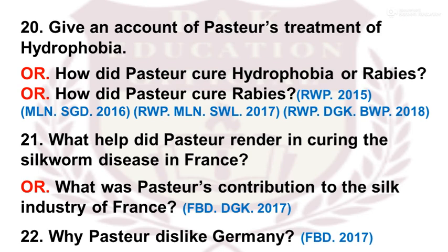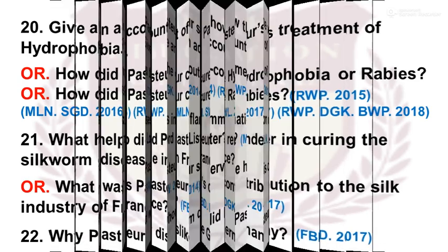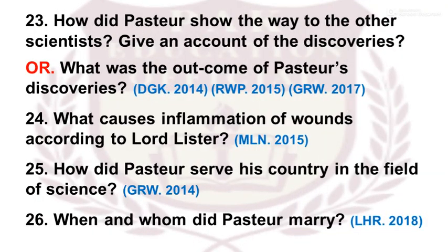What help did Pasteur render in curing the silkworm disease in France? What was Pasteur's contribution to the silk industry of France? Why did Pasteur dislike Germany? How did Pasteur show the way to other scientists? Give an account of his discoveries. What was the outcome of Pasteur's discoveries? What causes inflammation of wounds according to Lord Lister? How did Pasteur serve his country in the field of science?